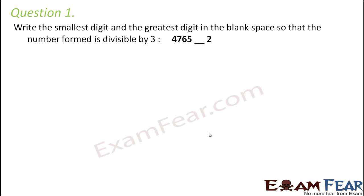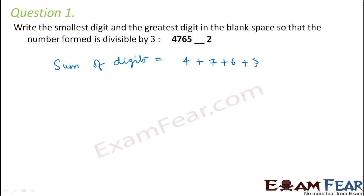Write the smallest digit and the greatest digit in the blank space so that the number formed is divisible by 3. What have we learned from the divisibility test of 3? A number is divisible by 3 when the sum of the digits is a multiple of 3, or when the sum of the digits is divisible by 3. So for this number to be divisible by 3, the sum of its digits — 4 plus 7 plus 6 plus 5 plus the blank space x — plus x plus 2, so we have to find the value of x.